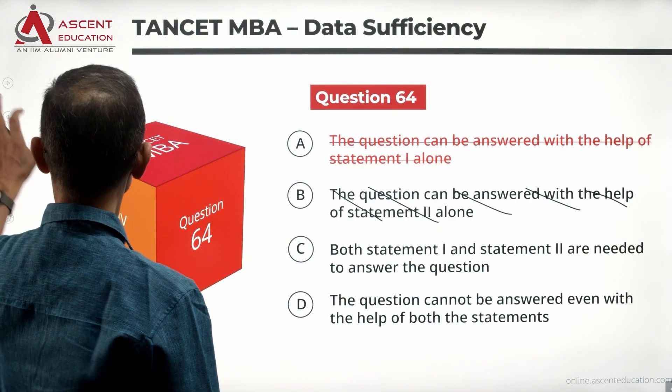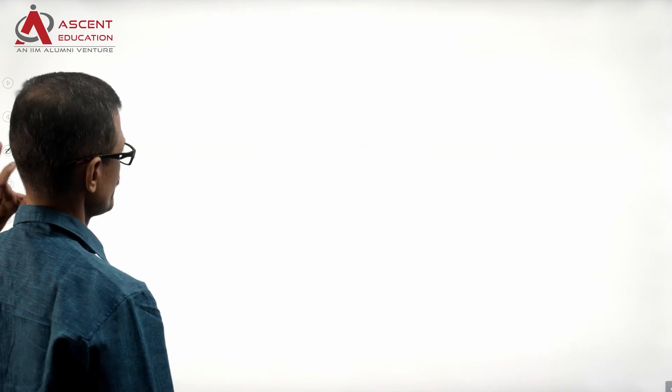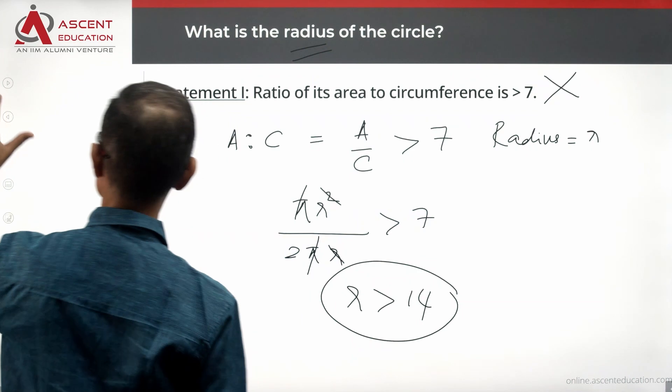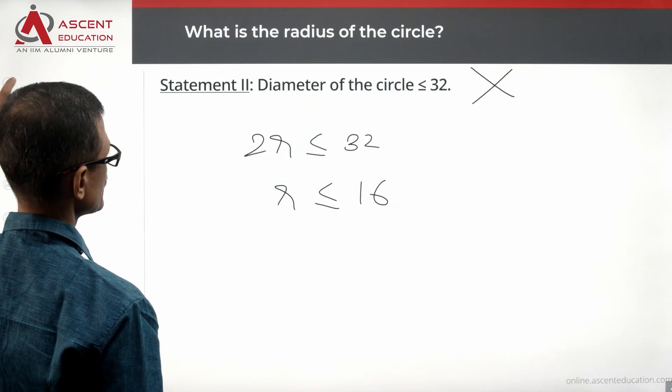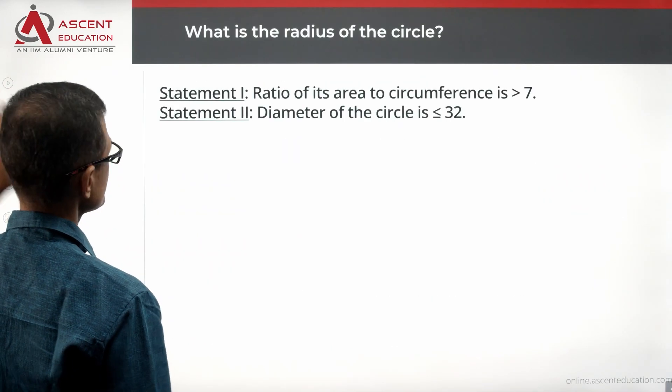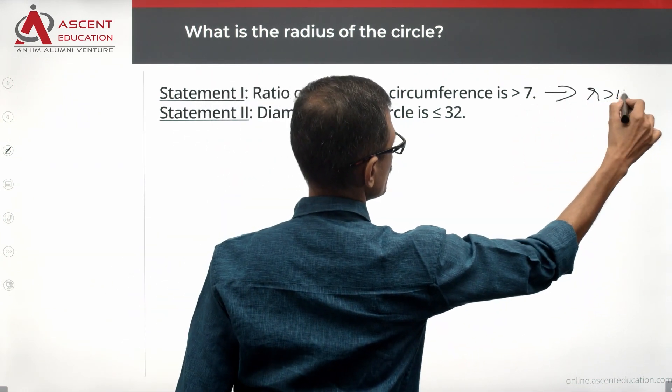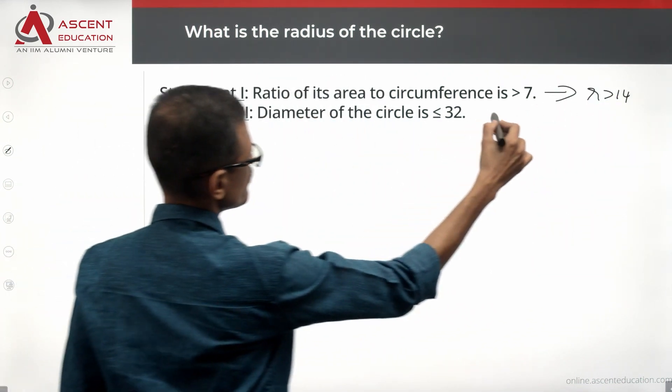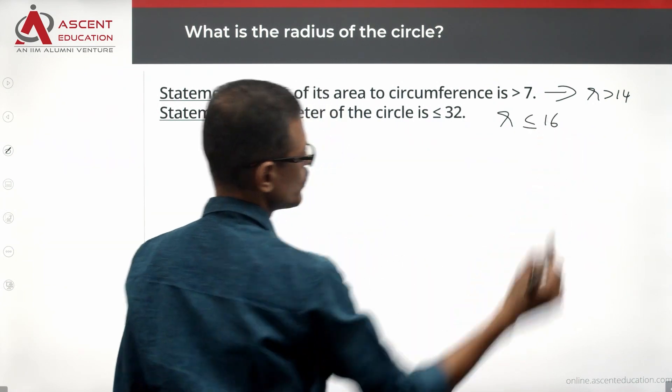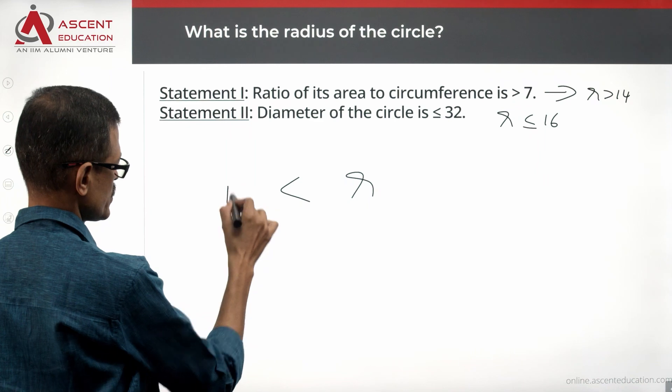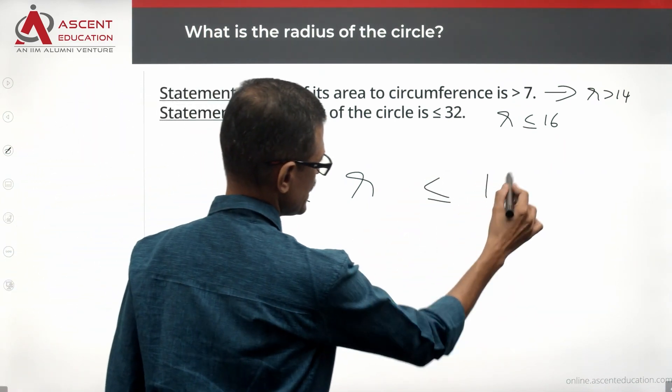Let's see if we can combine. Statement one, R is greater than 14. So if we combine, we know that R is greater than 14. Statement two, we know that R is less than or equal to 16. If we combine, we will have R to be a number which is greater than 14, less than or equal to 16.